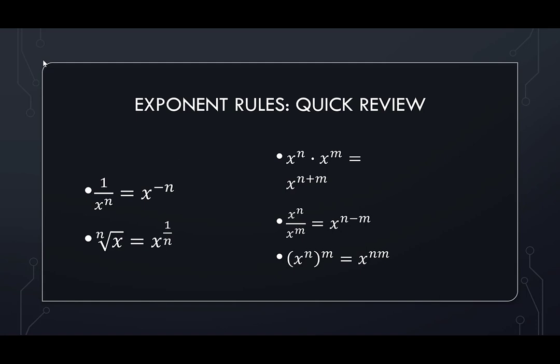When I divide exponents with the same base, I subtract the exponents. x to the n over x to the m is x to the n minus m. Then x to the n raised to the m is equal to x to the n times m. So when I raise an exponent to another power, I multiply the exponents together.